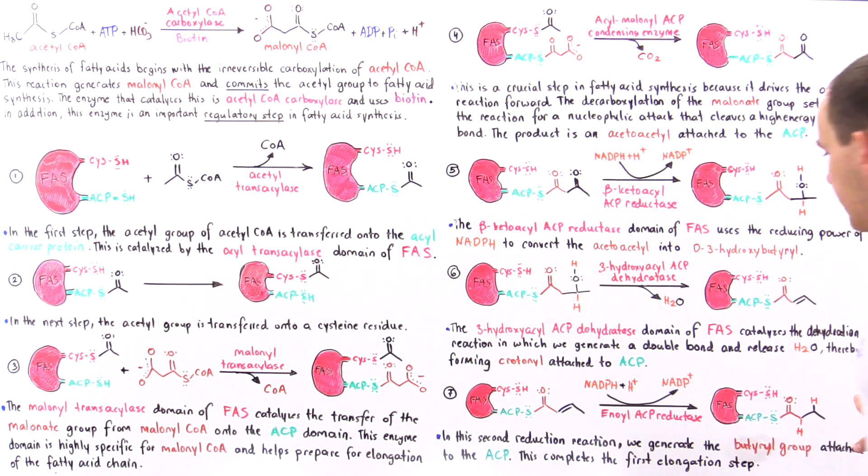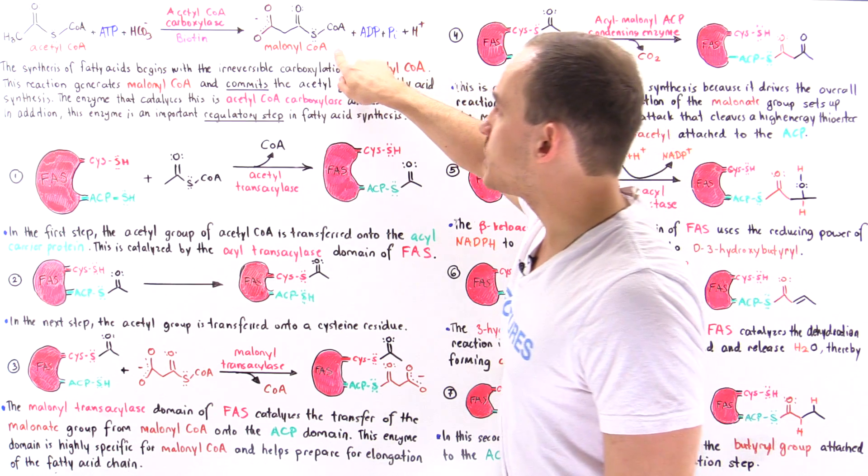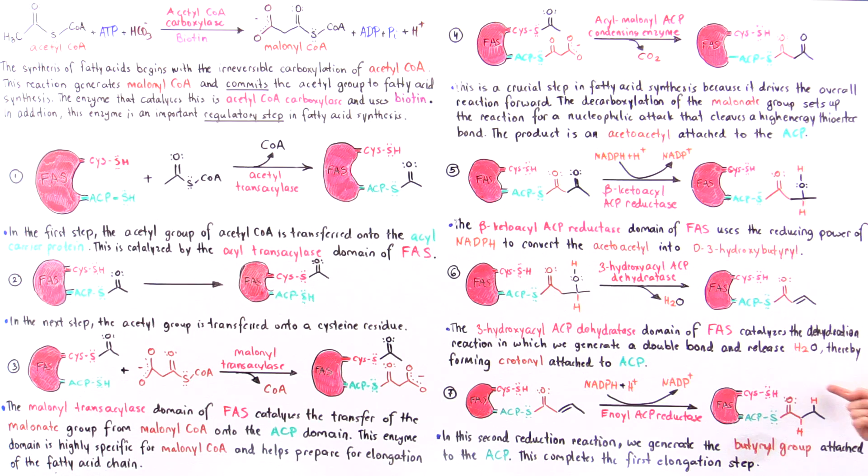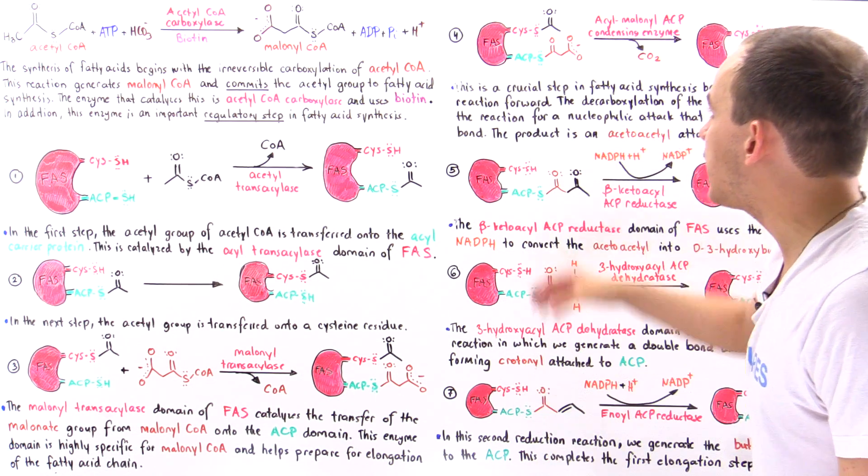So in the next step we're going to use another malonyl coenzyme A to attach it onto the ACP that now does not contain this, and now we're going to continue via these steps.